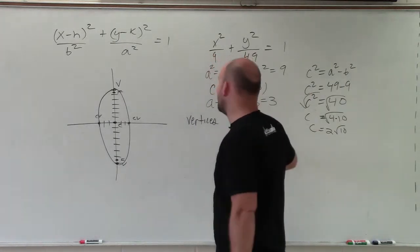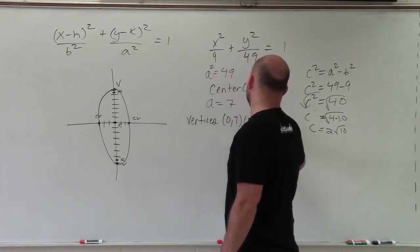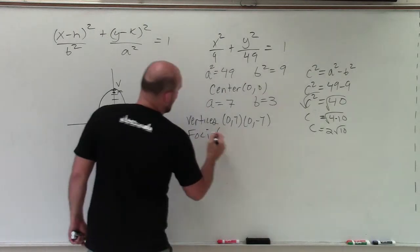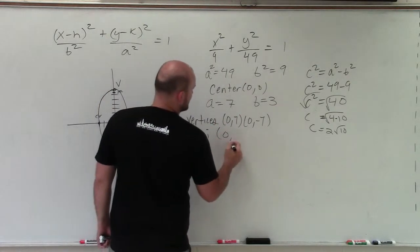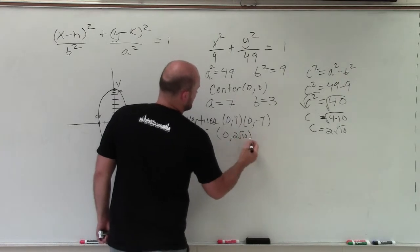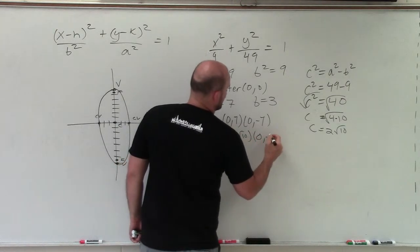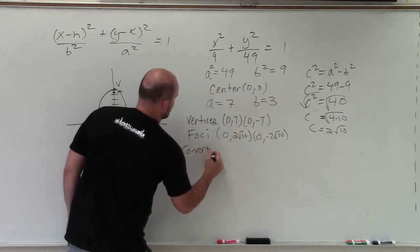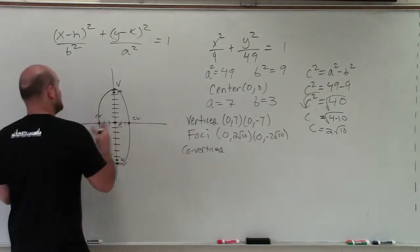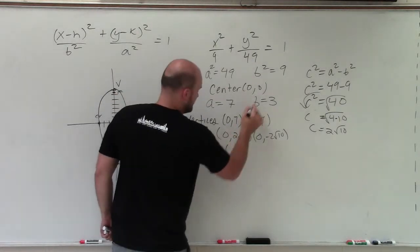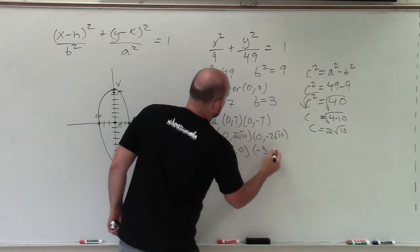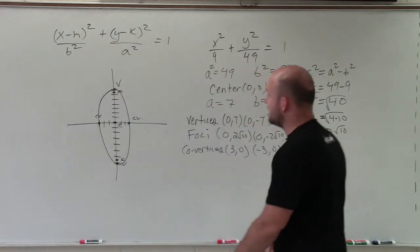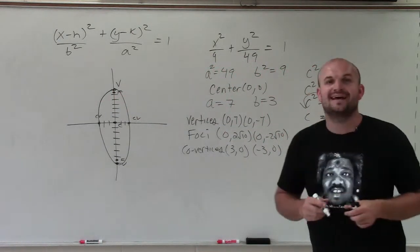Again, the vertices were just up and down 7. So that's going to be 0, 7 and 0, negative 7. The foci was just up and down our foci. So that would be 0, 2, square root of 10, comma, 0, comma, negative 2, square root of 10. And then lastly, our covertices were now just left and right from the center. So that's going to be 3. So that would be 3, 0 and negative 3, 0. So there you go, ladies and gentlemen. That is how you graph an ellipse, as well as determine the vertices, foci, and covertices.